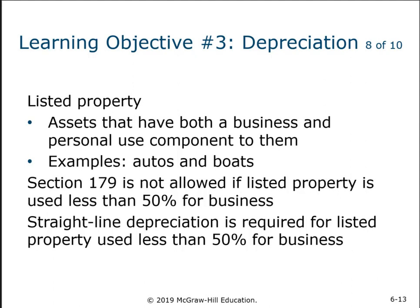Listed property has specific limitations. You can't use Section 179 if the listed property is used less than 50% for business. You can still deduct the business-use percentage of expenses — for example, 40% business use — but Section 179 is not allowed if you don't use it more than 50% for business. Additionally, straight-line depreciation is required for listed property used less than 50%, meaning you can't use the MACRS tables and may need to do formula calculations.